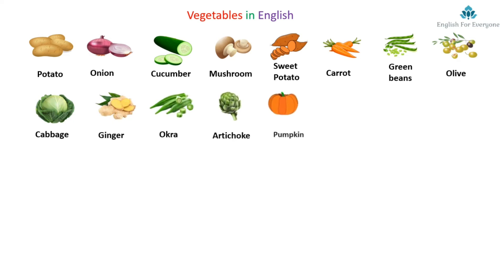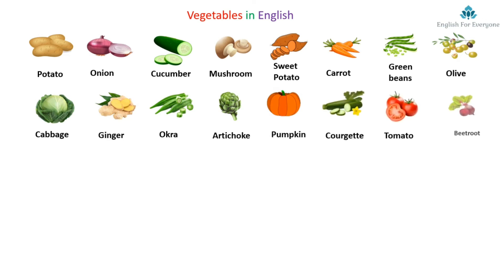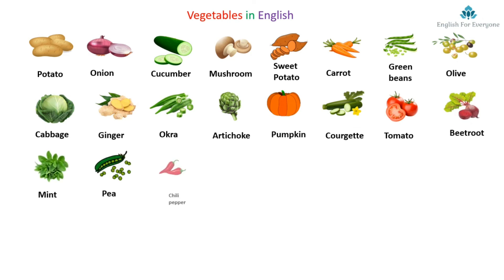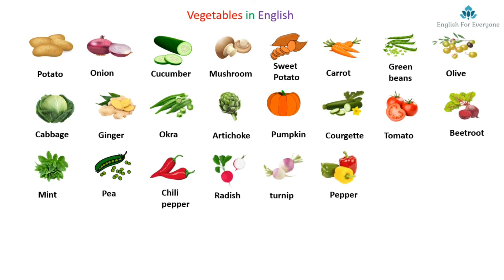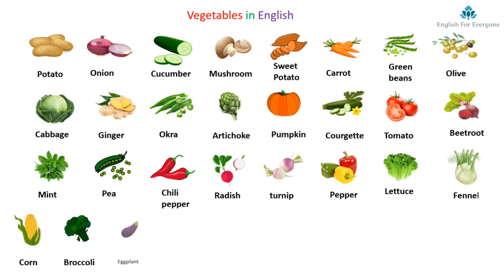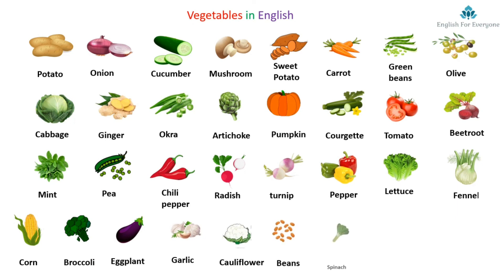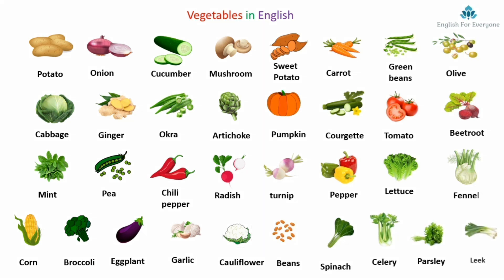Artichoke. Pumpkin. Courgette. Tomato. Beetroot. Mint. Pea. Chili pepper. Radish. Turnip. Pepper. Lettuce. Fennel. Broccoli. Eggplant. Garlic. Cauliflower. Beans. Spinach. Celery. Parsley. Leek.